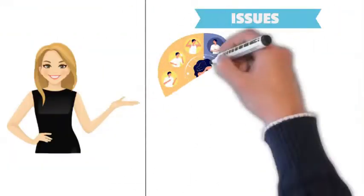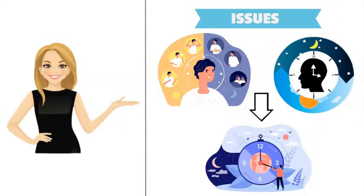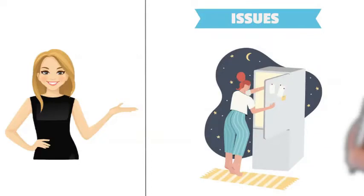Due to irregular schedules, the circadian rhythm is disrupted from travel, work, and social engagements. Eating late at night, right before going to bed.